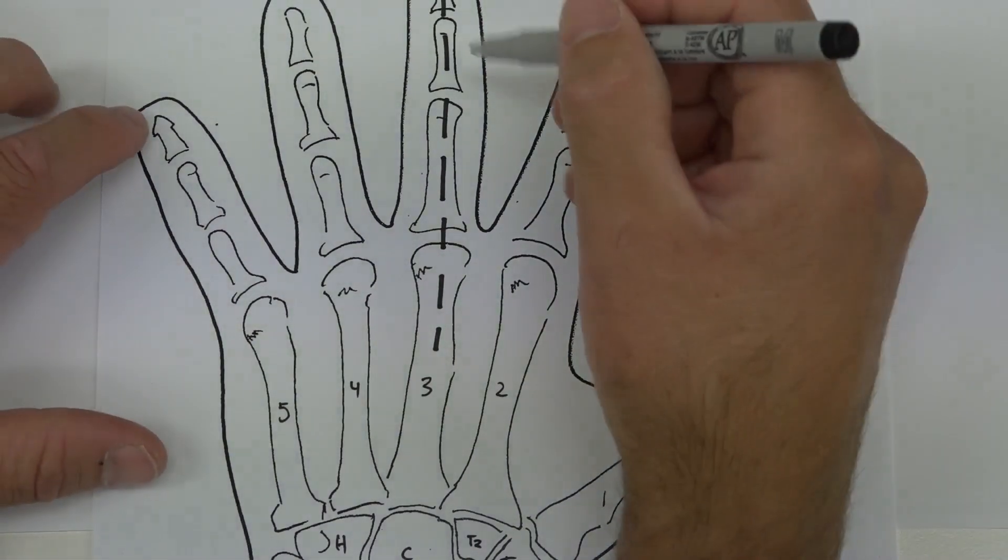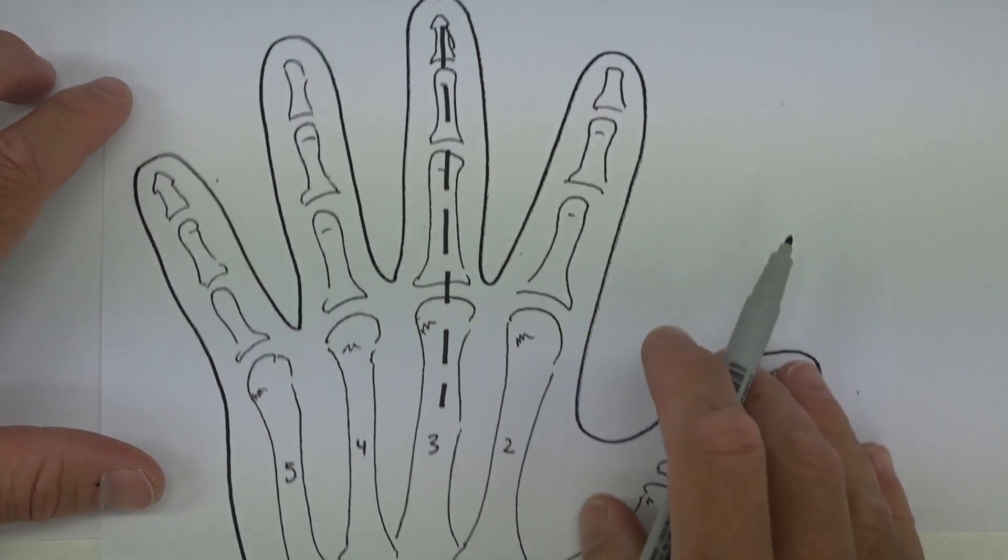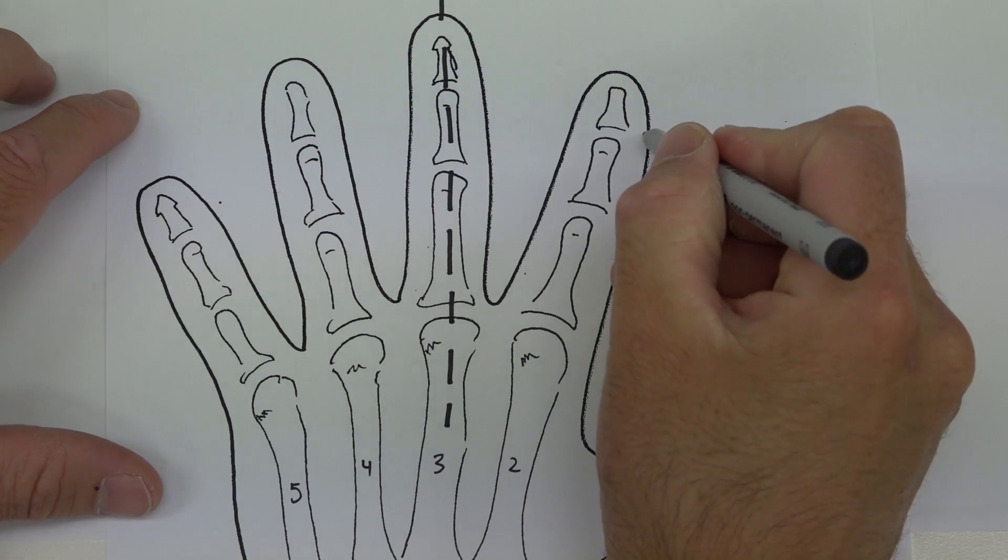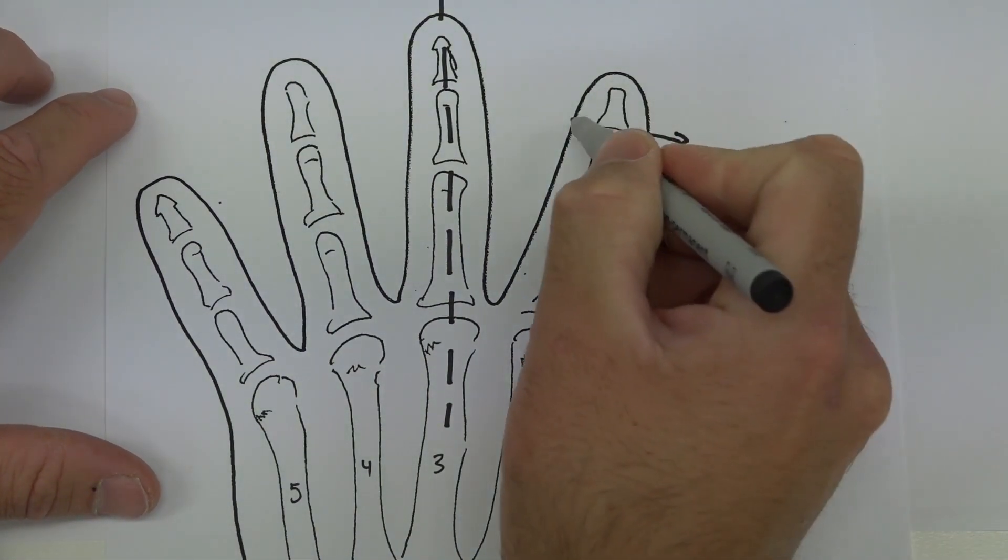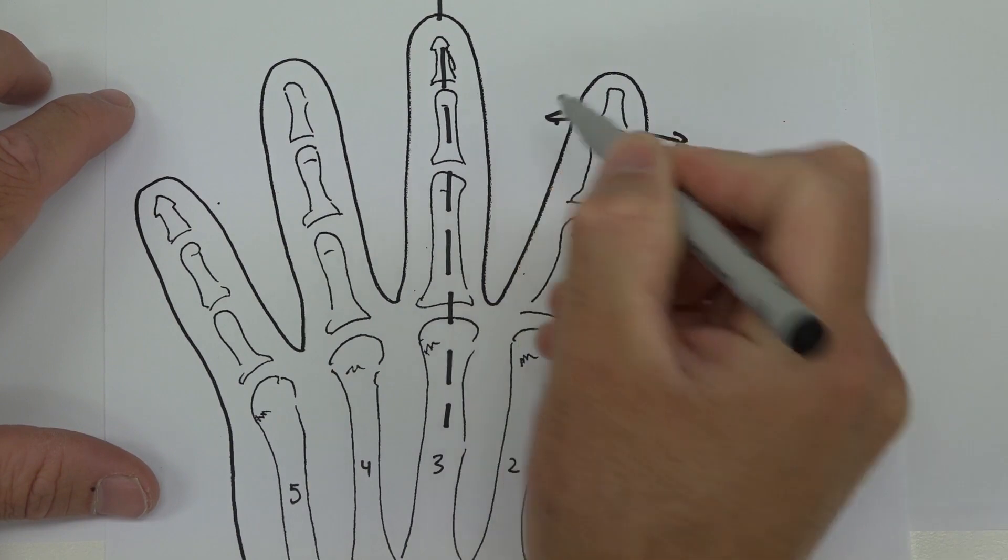Any motion that occurs away from the middle finger would be abduction. So if the index finger moves this way it's abduction; if the index finger moves this way it's also abduction.